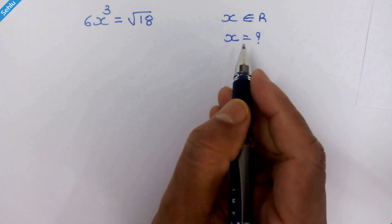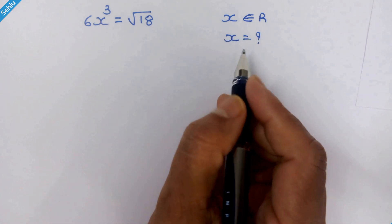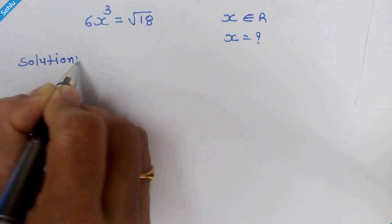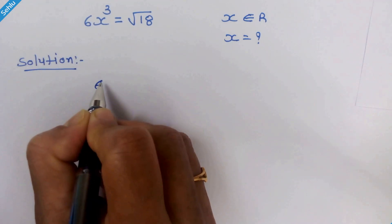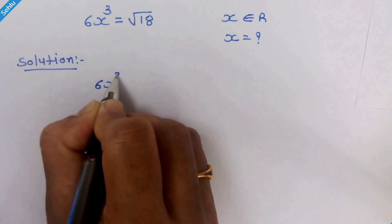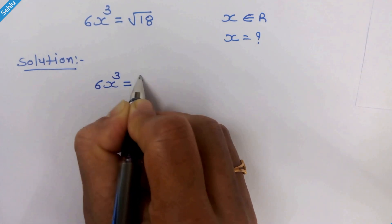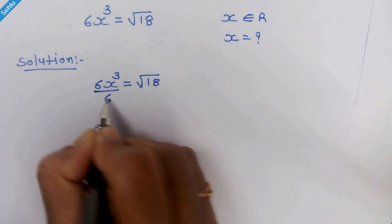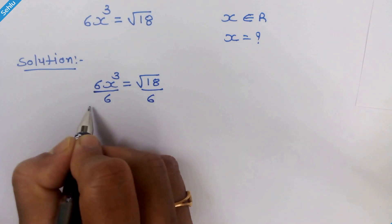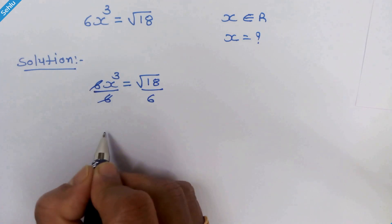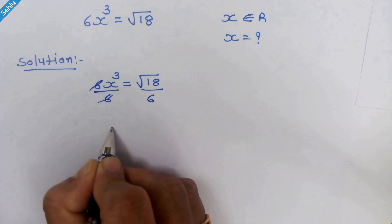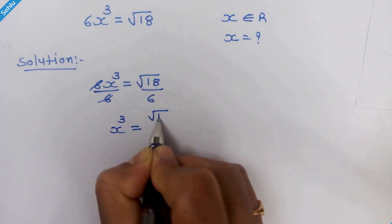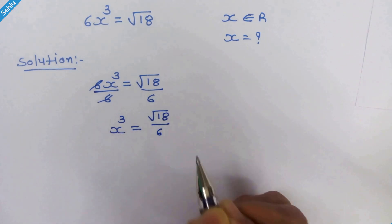Hello friends, we have to find the real value of x. Our equation is 6x³ = √18. First, we will divide both sides by 6. These two get cancelled out, so now we have x³ = √18 / 6.